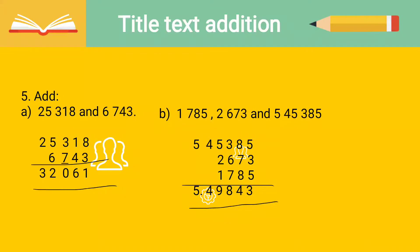For part B: they have given us three numbers — 1,785, then 2,673, and five lakh 45,385. At the top I have written 5,45,385, then 2,673, then 1,785. We add all three lines of numbers together and the final answer we have got is 5,49,843. Please do this fifth question in your math notebook.